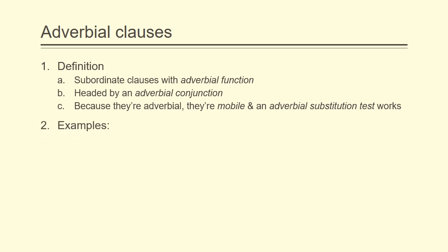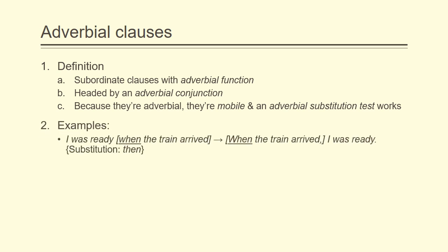Let's take a look at two examples. First of all, the sentence: 'I was ready when the train arrived,' which consists of an independent clause, 'I was ready,' and a dependent or subordinate clause, 'when the train arrived.' This subordinate clause is adverbial because it starts with an adverbial conjunction, 'when,' and furthermore provides adverbial information — namely information about time — which is going to modify the clause 'I was ready.' In order to form the subordinate clause, all we do is take an independent clause, 'the train arrived,' and add the adverbial conjunction at the beginning, making it 'when the train arrived.'